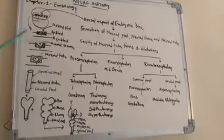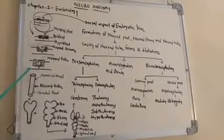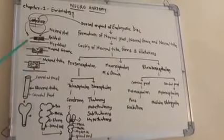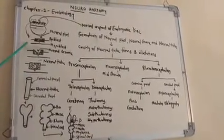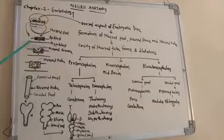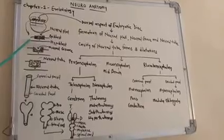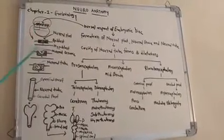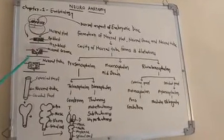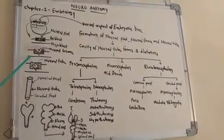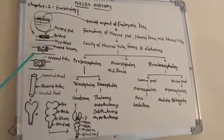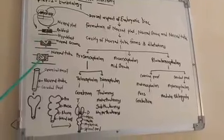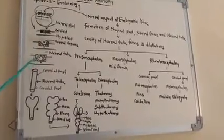There are three stages for the formation of the neural tube. The first stage is the neural plate formation. From this neural plate comes the neural groove formation, and from the neural groove there is a formation of the neural tube.